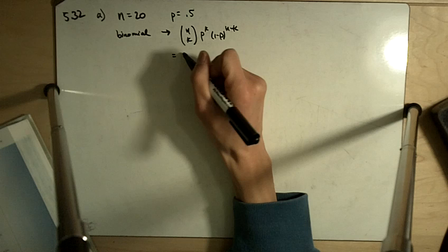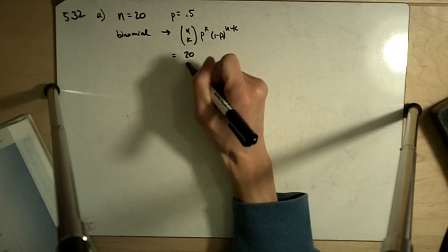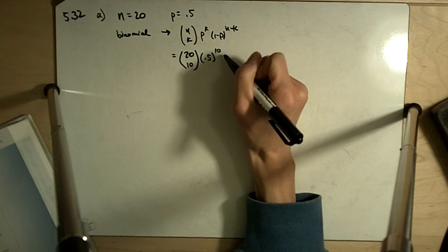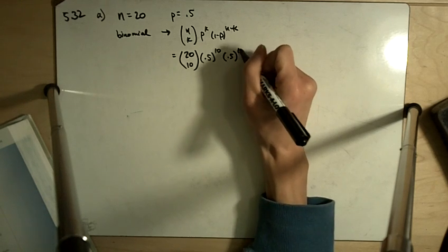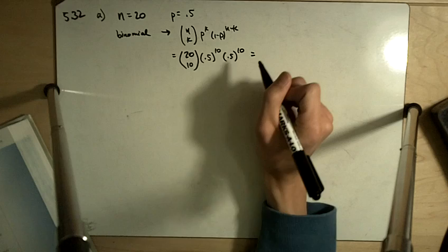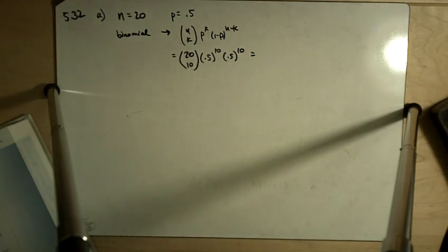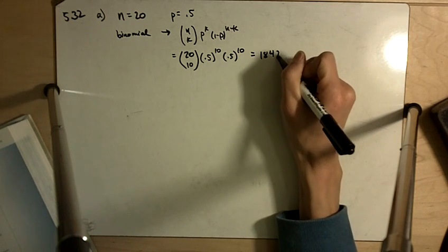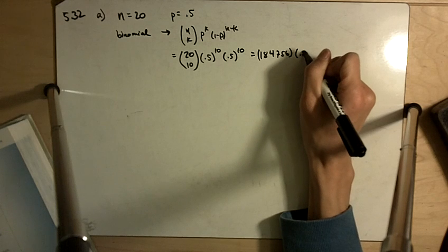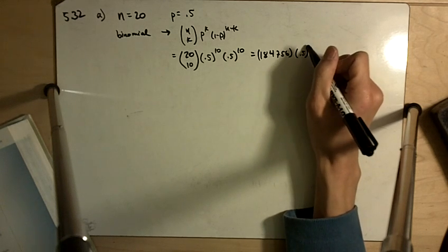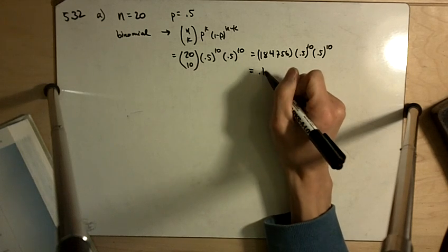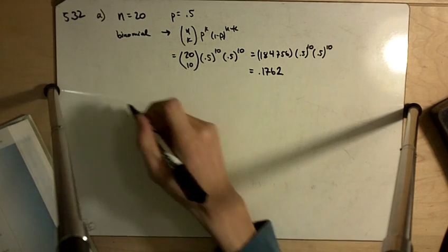So that will be 20 choose 10, we want to get 10 heads, each with probability 0.5, and we want to get 10 tails. When you crunch this out, you get 0.84756 times 0.5 to the 10 times 0.5 to the 10, and you get 0.1762.